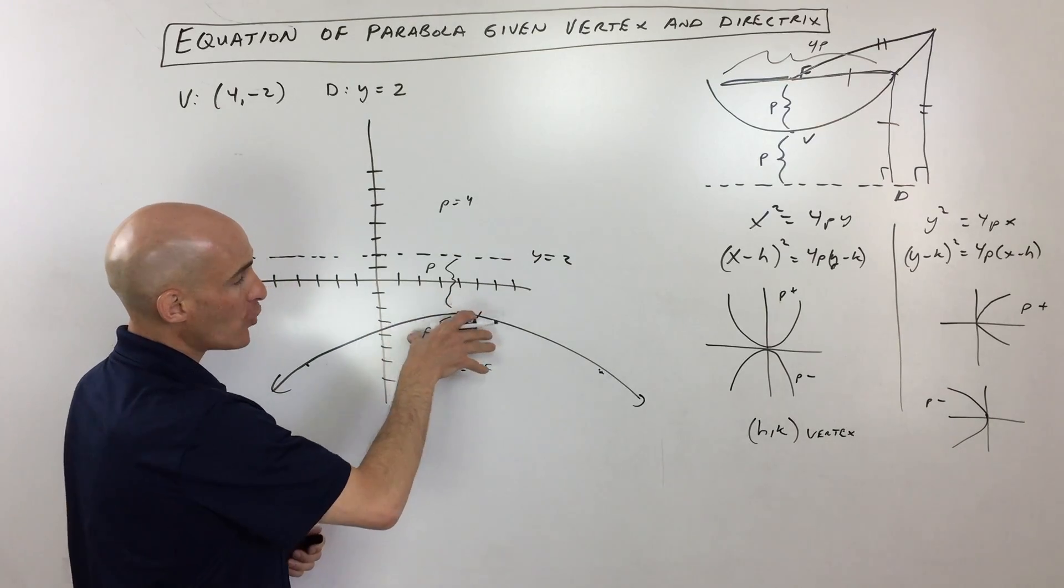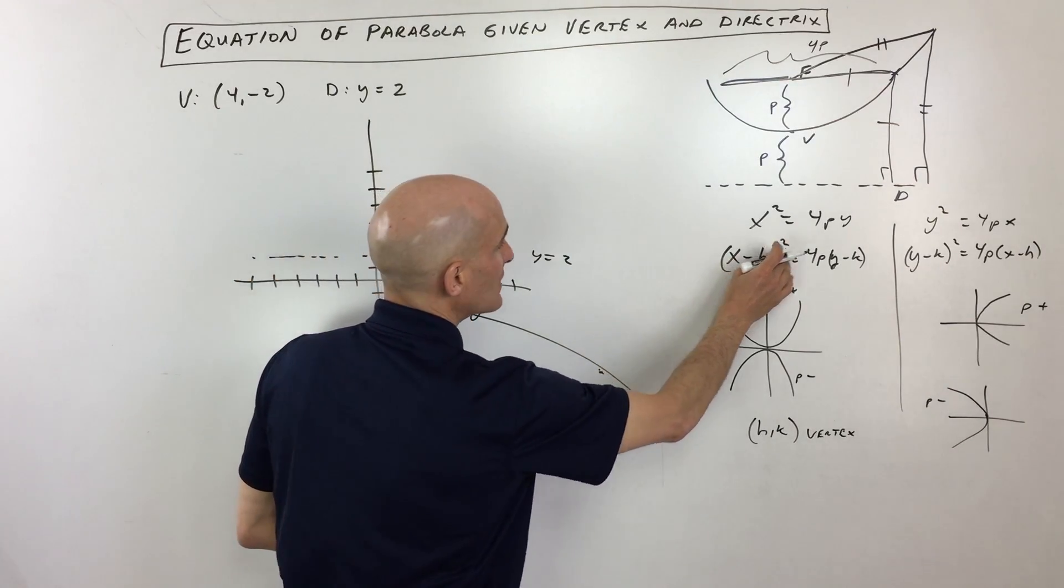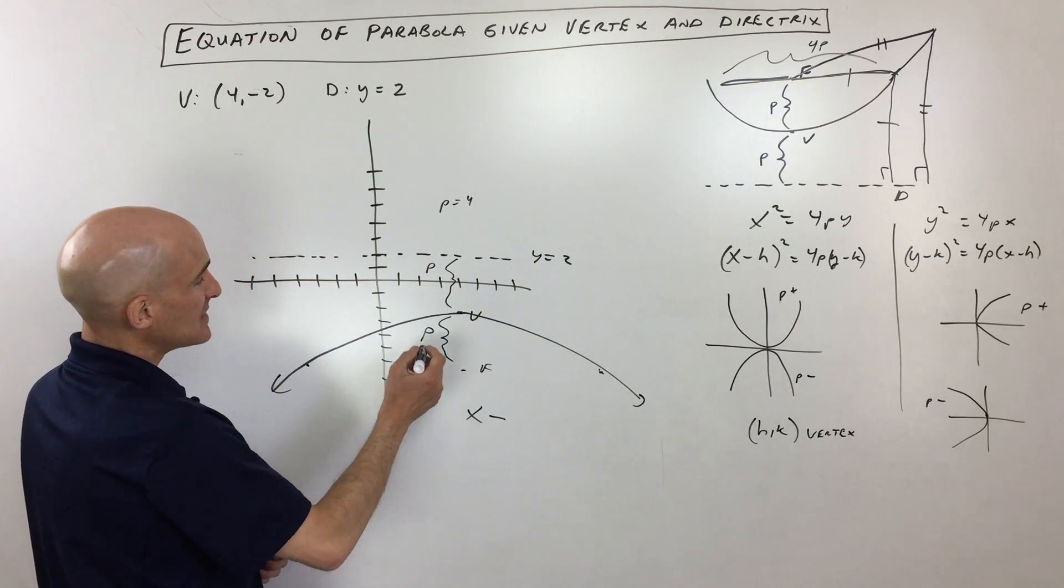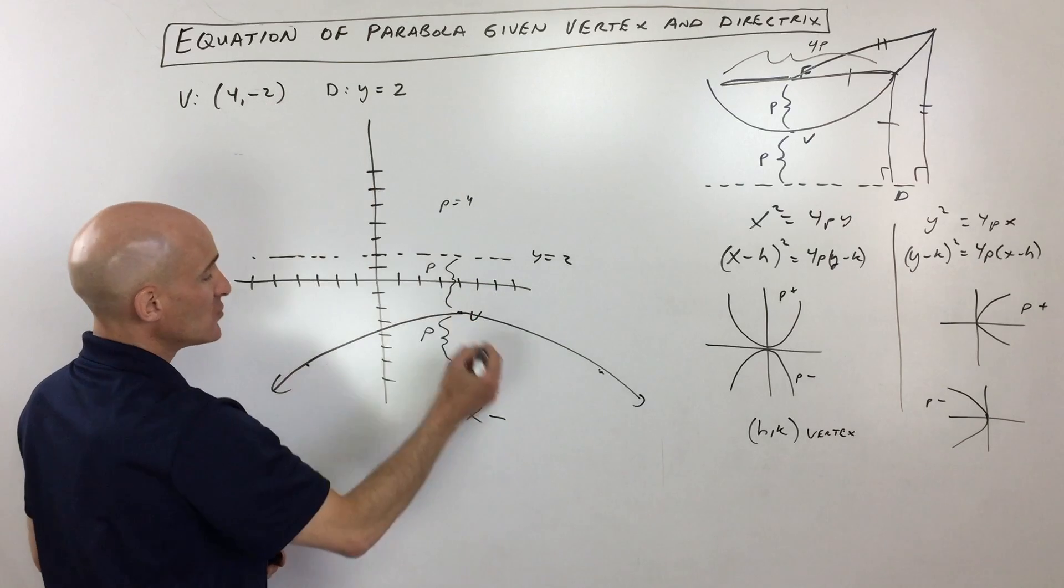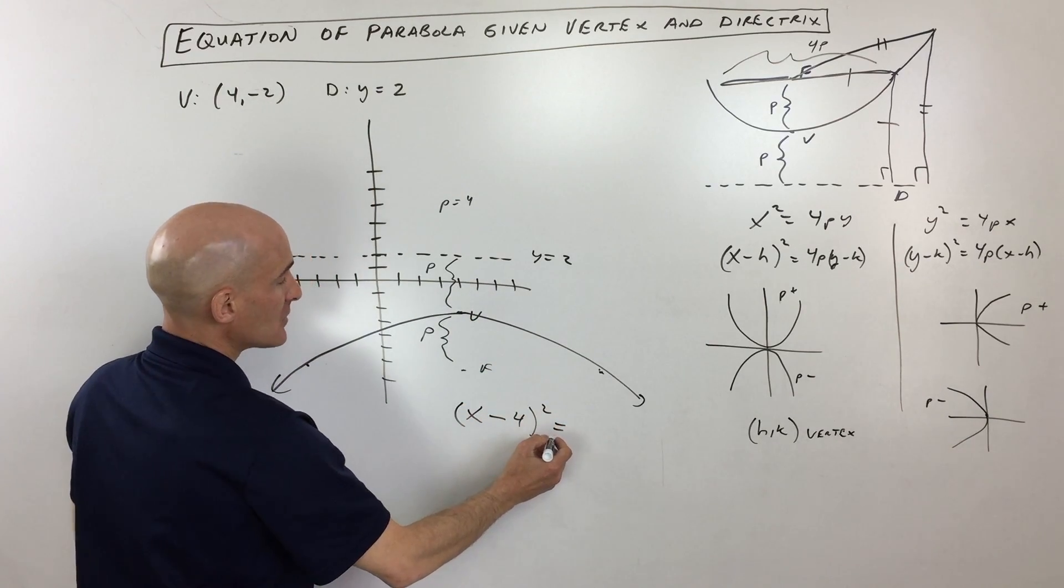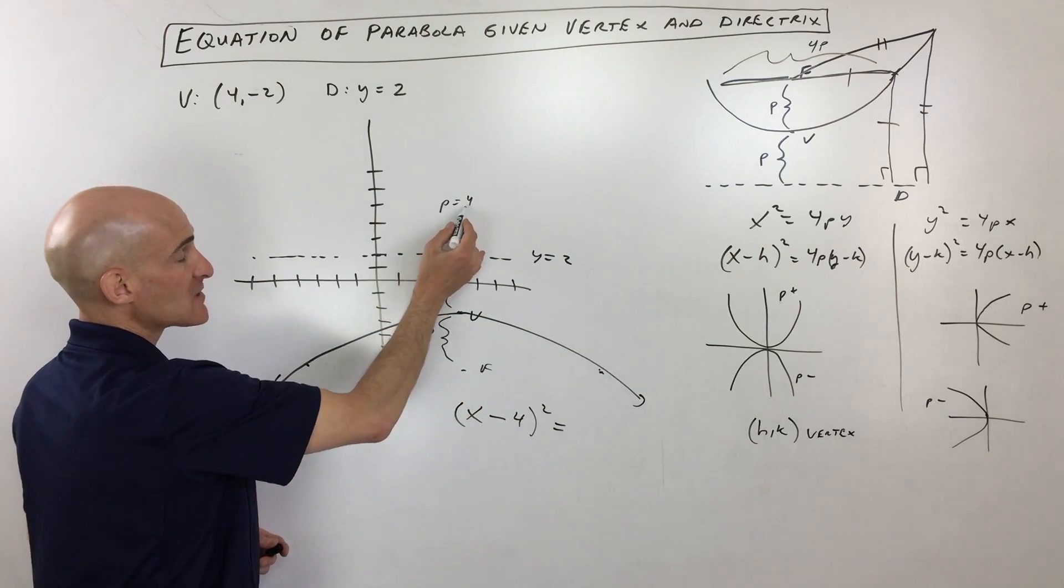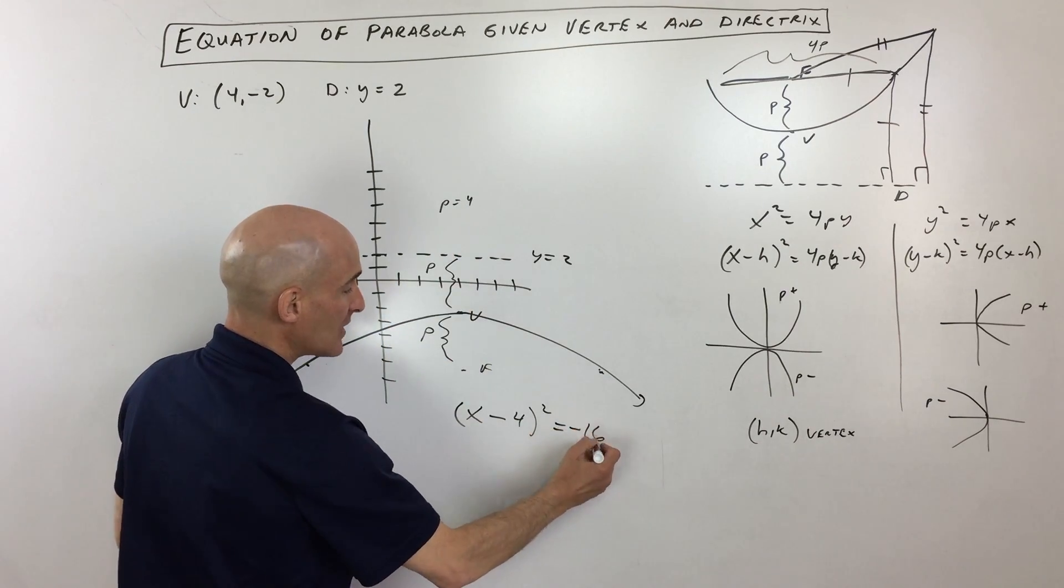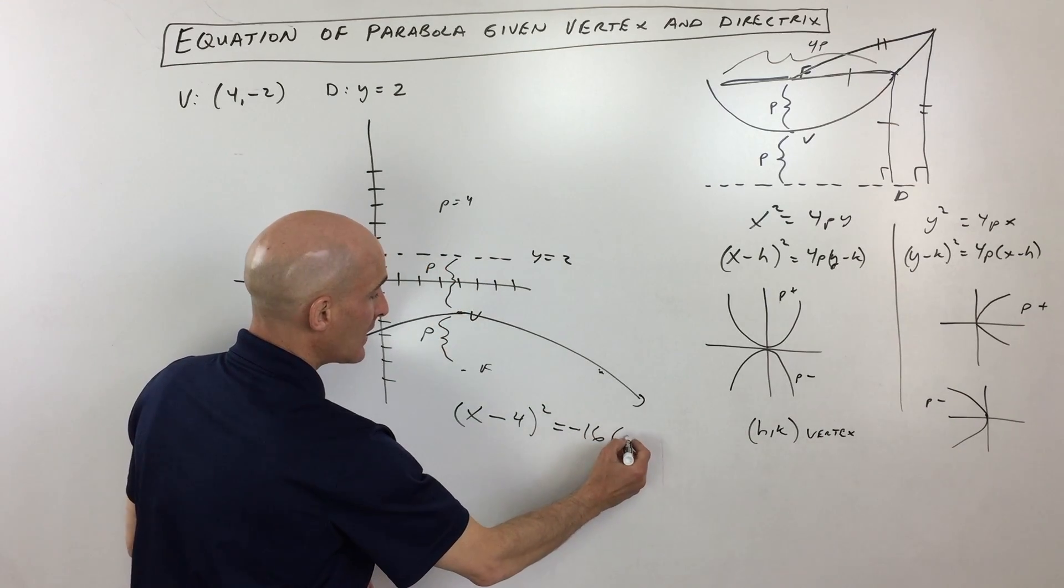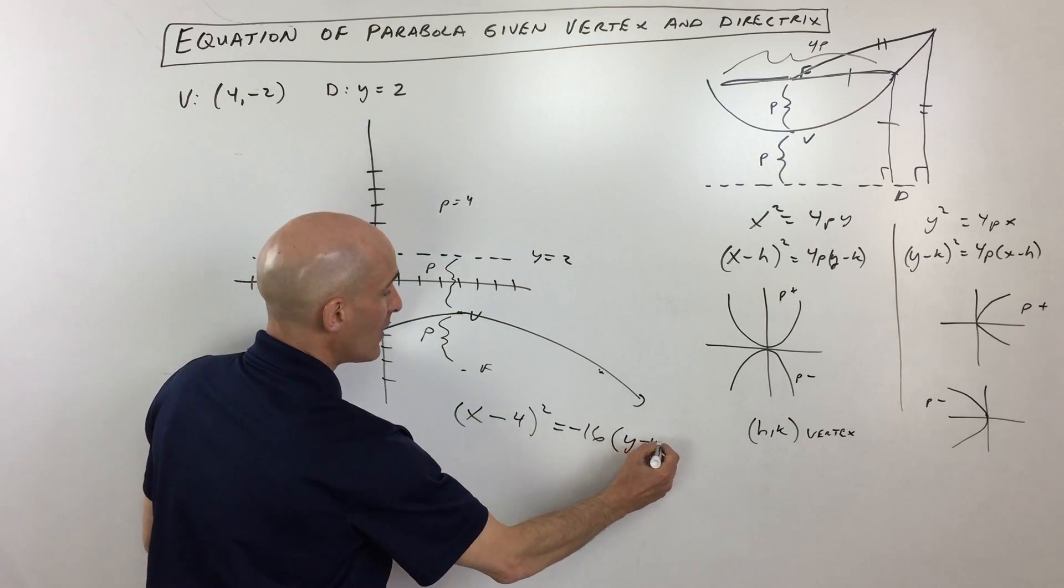As far as the equation goes, because it's opening down, we know this is going to be an x squared variety. So it's going to be x minus, let's see, now the vertex is at 4 negative 2, so it's going to be x minus 4 squared equals 4 times p, 4 times 4 is 16, but this is going to be a negative 16 since it's opening down. If it was opening up, it'd be a positive 16.